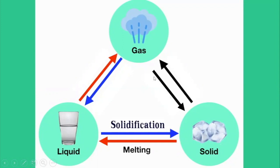Next one, number three: if we have liquid and through a physical change we will get gas. We have liquid, we increase temperature, we heat it up, and from liquid we get gas. This physical change we call evaporation.